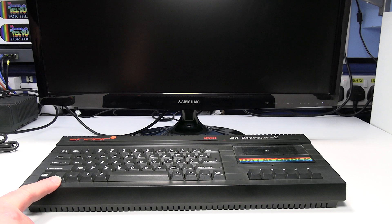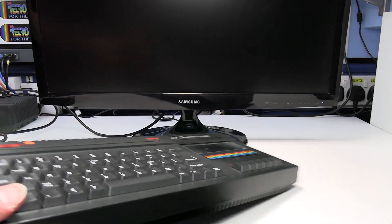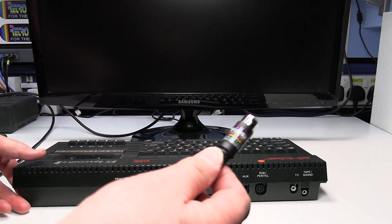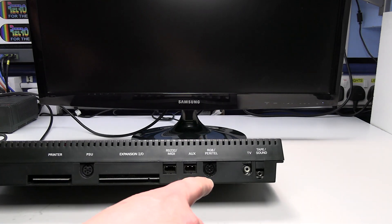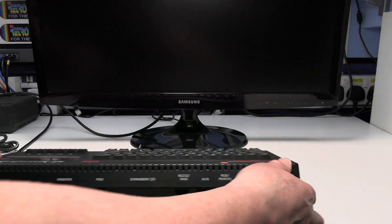Make sure the computer and the TV are switched off. Connect the DIN plug end of the SCART lead to the RGB input or output on the Spectrum.